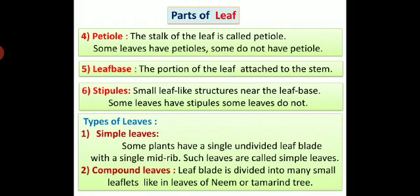Types of leaves. There are two types of leaves: simple leaves and compound leaves. Some plants have a single undivided leaf blade with a single midrib. Such leaves are called simple leaves. For example, leaves of peepal tree. Compound leaves: leaf blade is divided into many small leaflets like in leaves of neem or tamarind tree.